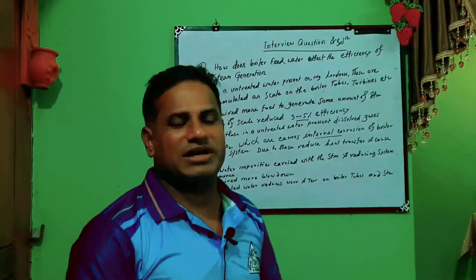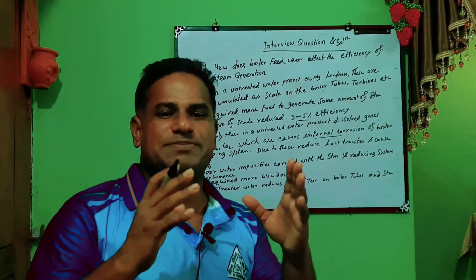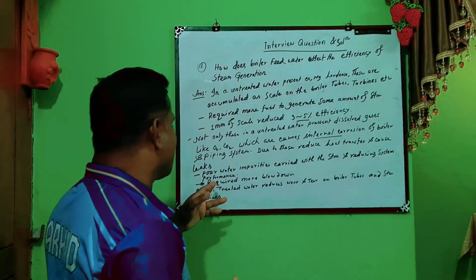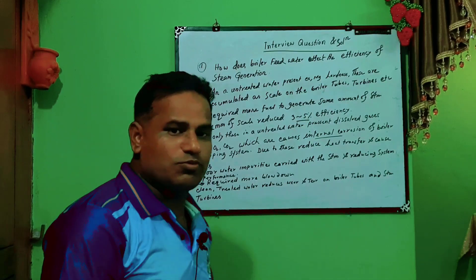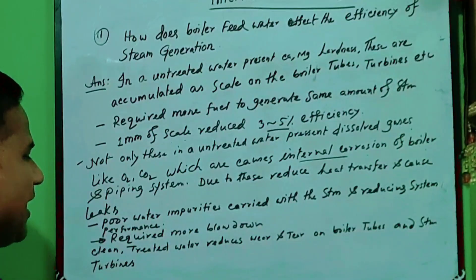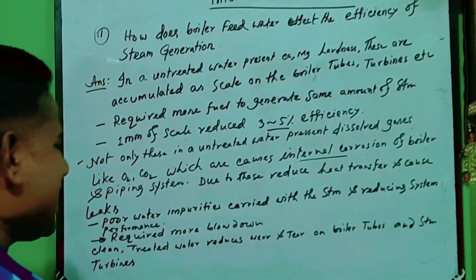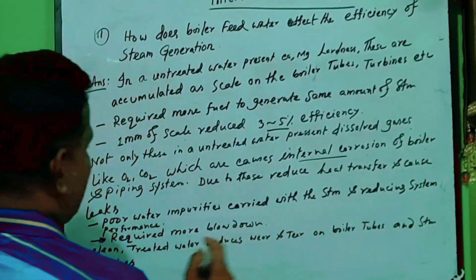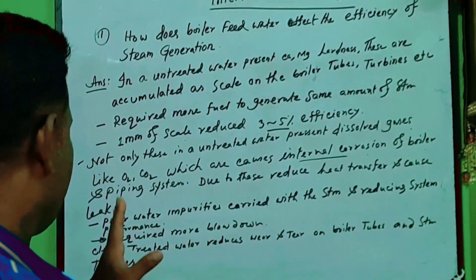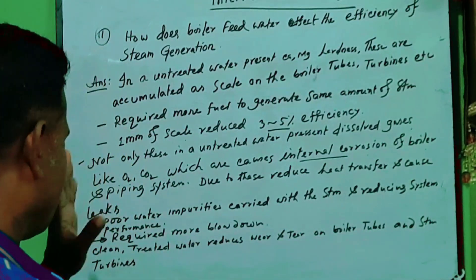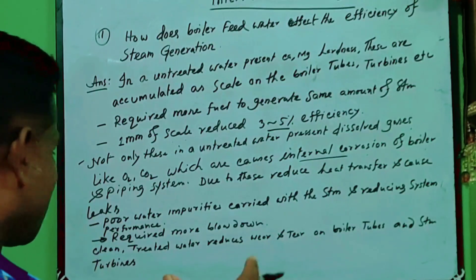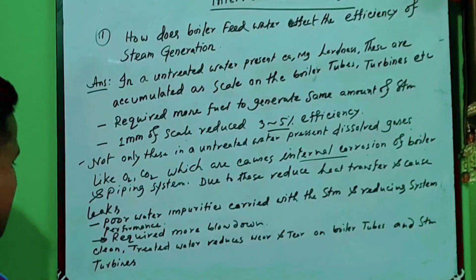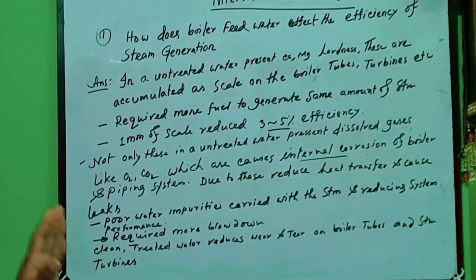Additionally, more blowdown is required when untreated water is used, because the pH and hardness levels increase and must be controlled. When more blowdown is performed, both water and energy are lost.